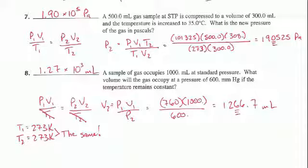It's compressed to a volume of 300 milliliters, so we have a V1, a T1, and a P1. Now we have a V2, and the temperature is increased to 35 degrees Celsius. Well, there's a T2.